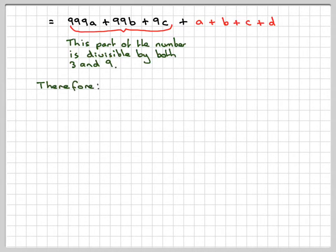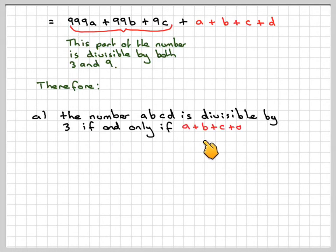Therefore, if I can take out 3 from here and this bit is divisible by 3, for the whole number to be divisible by 3, these digits here must also be divisible by 3. Therefore, the number ABCD is divisible by 3 if and only if A plus B plus C plus D is divisible by 3.